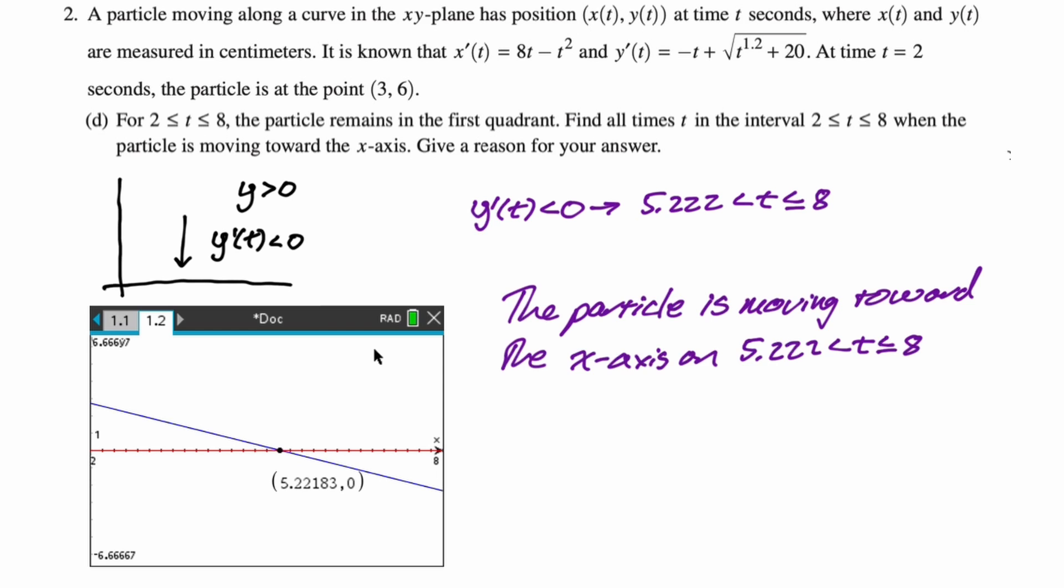But then we need to give a reason. So I said the particle is moving toward the x-axis on that interval. And my reason is I included that y > 0 because it is relevant: y(t) > 0 and y'(t) < 0 on that interval. That'll move you toward the x-axis. Because if you just think about it, if y was negative and y' was negative, you'd be moving away from the x-axis. So I think it's important to include. We'll see when the scoring guidelines come out if they thought it was important to include. I think they probably will, but who knows. All right, that's the entire problem. I hope this was helpful. And good luck.